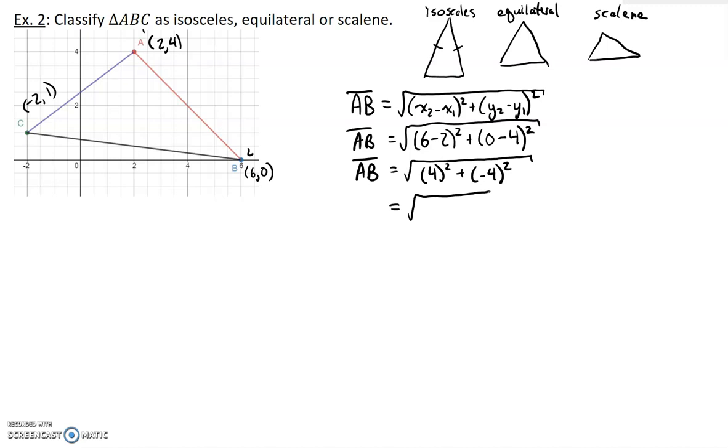And we find that to be equal to the square root of 32. Now, I'm going to keep them as exact answers here so we can compare them. Because sometimes they'll be really close when you round them and you might not notice the difference. So we're going to do the same thing for the others. Pause your video, do them, and then check your answer with me.